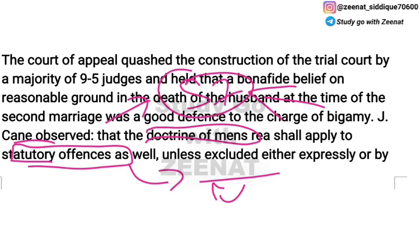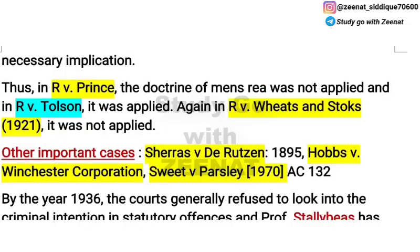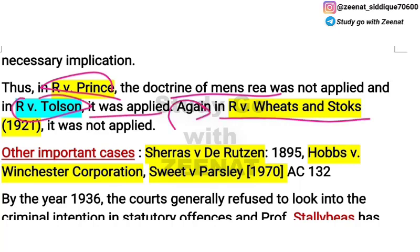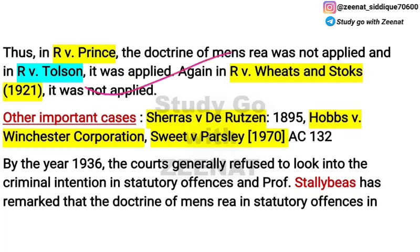So here we learned that in R v Prince the doctrine of mens rea was not applied, whereas in R v Tolson it was applied. After this, another case came — R v Veers and Stocks — in which the doctrine of mens rea was again not applied. All these cases are important.